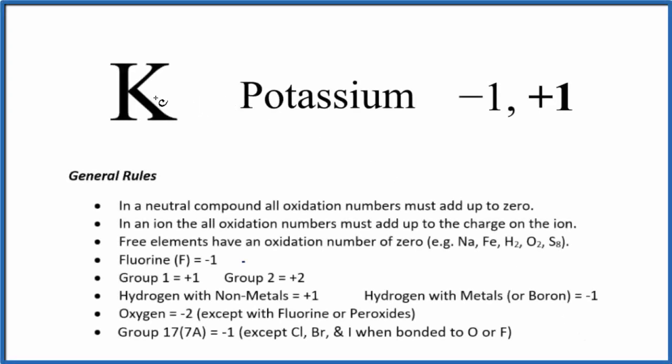In this video we'll look at the oxidation number for K, potassium. Just potassium all by itself. Since it doesn't have a positive or negative sign after it, it's not an ion, it's just a free element and it's going to be neutral. When we have a neutral substance here, all the oxidation numbers have to add up to zero.